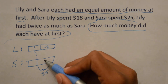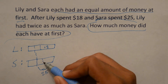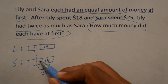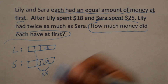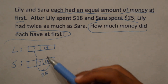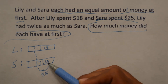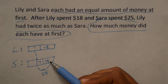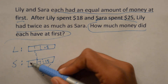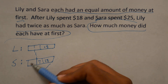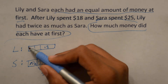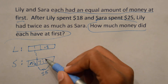First, we can split up this $25 into $18 and $7, so that we can see that Sarah also spent as much as Lily and more. But now we know that what Sarah has here is half of what Lily has here.